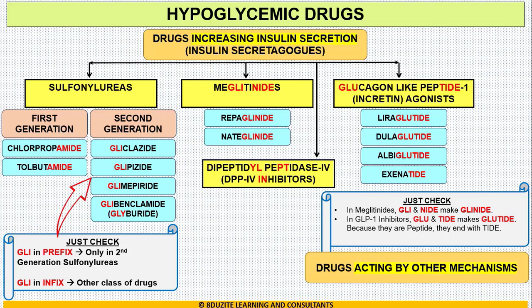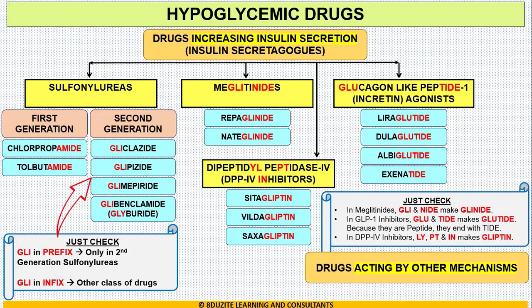Moving to dipeptidyl peptidase-4 inhibitors, we have three drugs: sitagliptin, vildagliptin, and saxagliptin. If you observe the red letter words — G-L-I, P, T, and I-N — combined, it becomes gliptin. So all these drugs are gliptins.